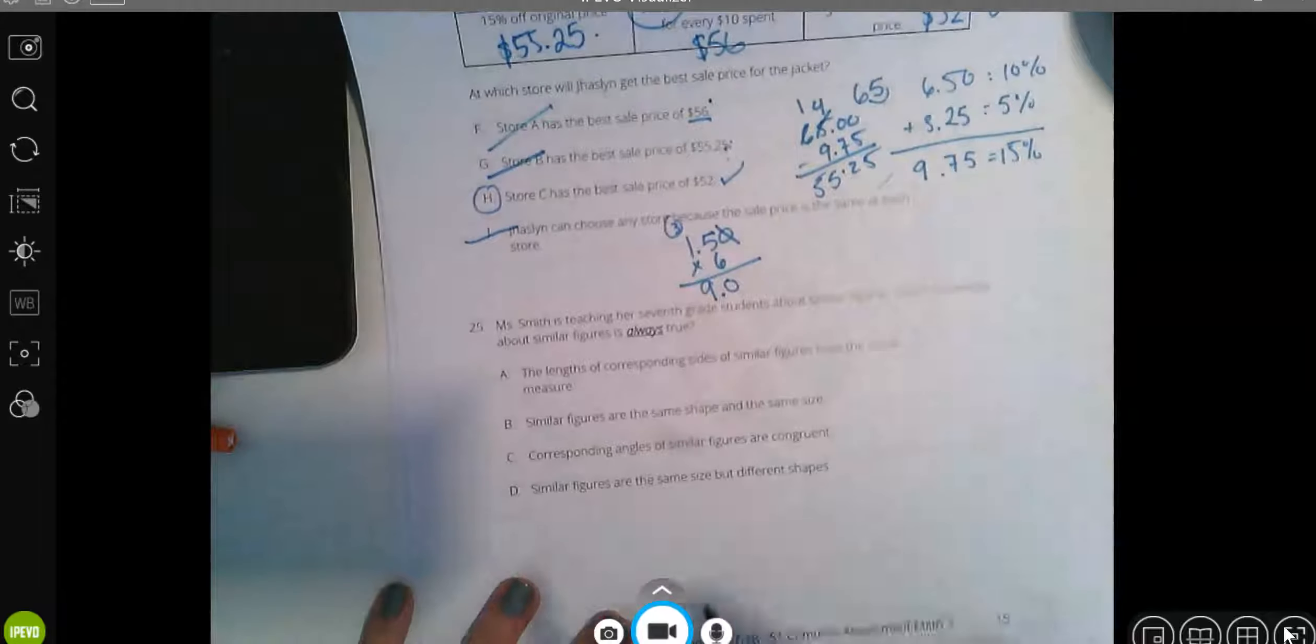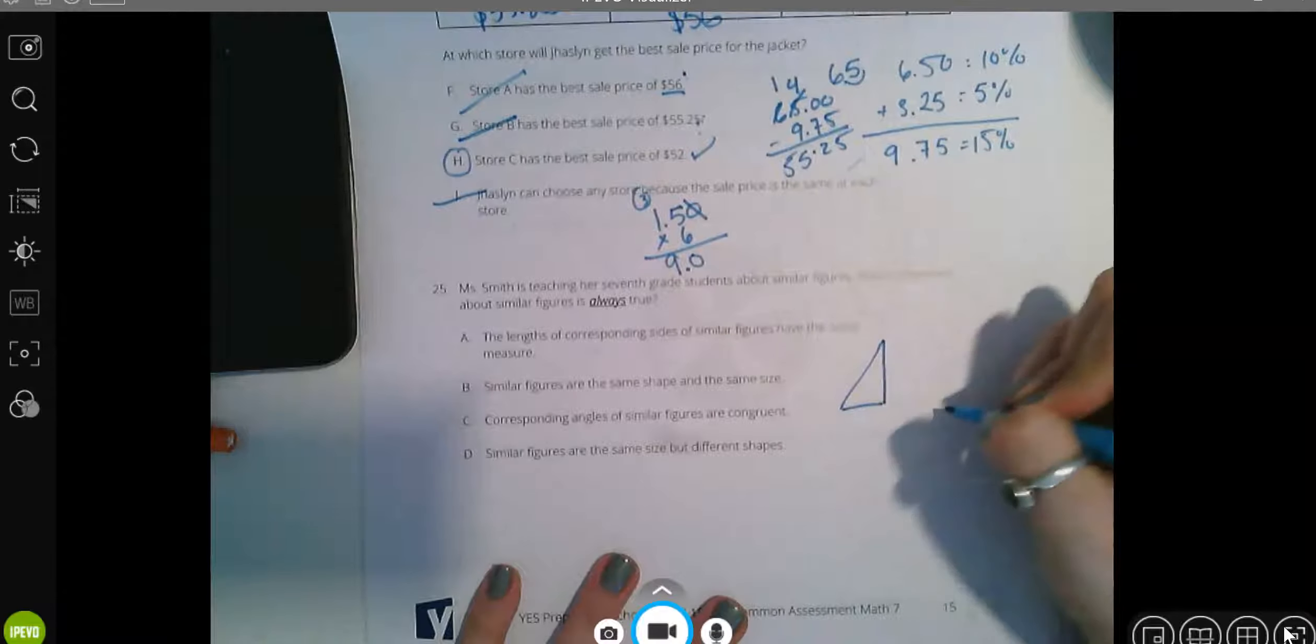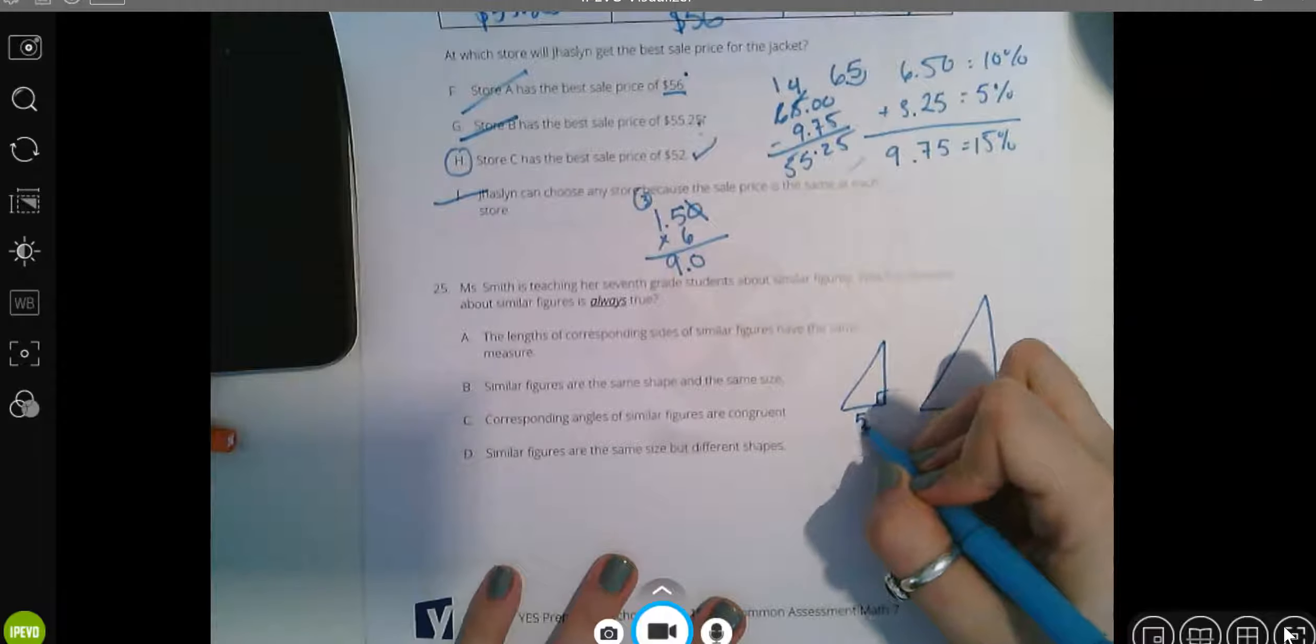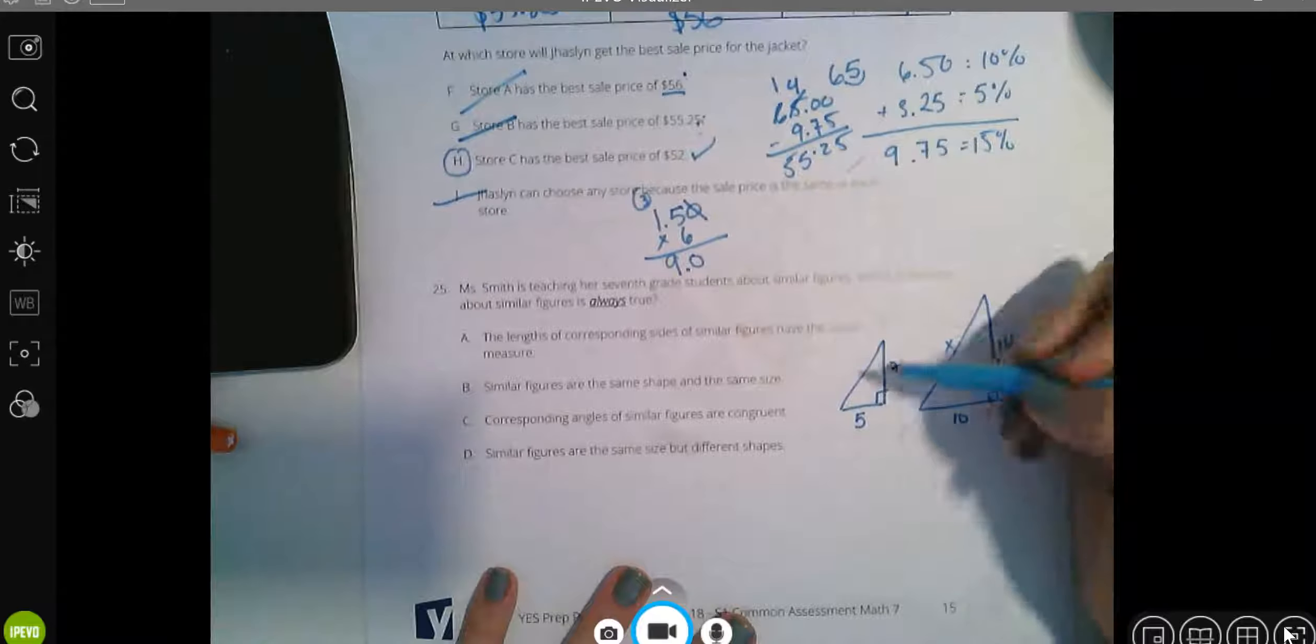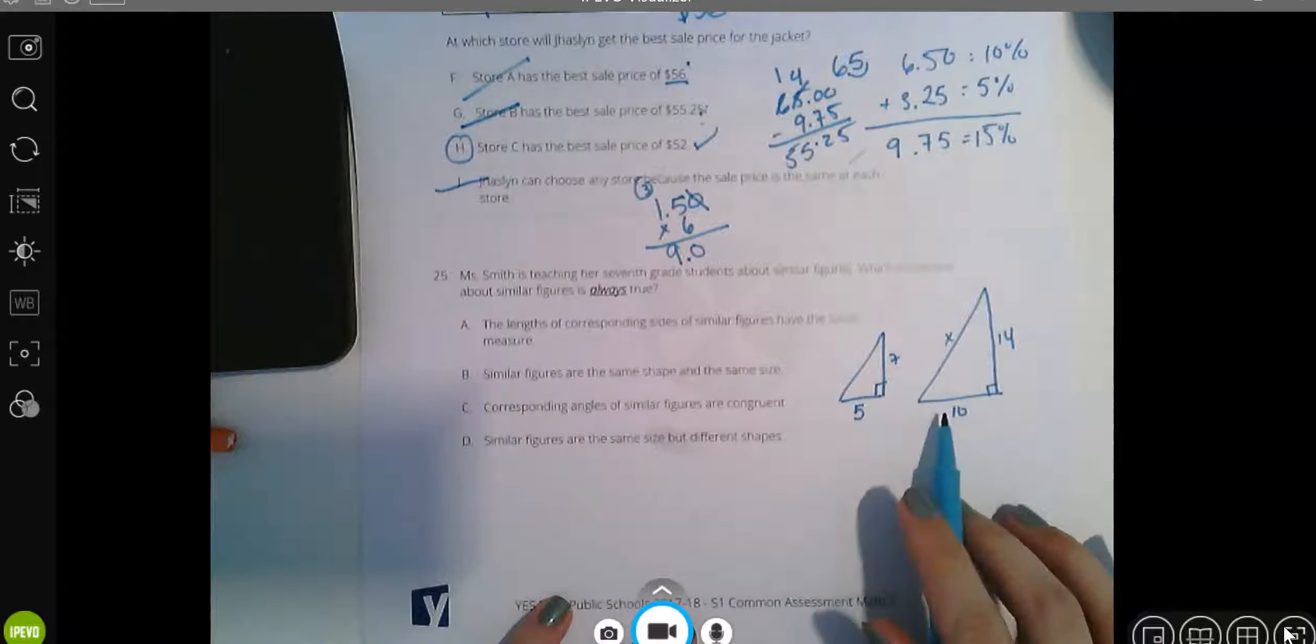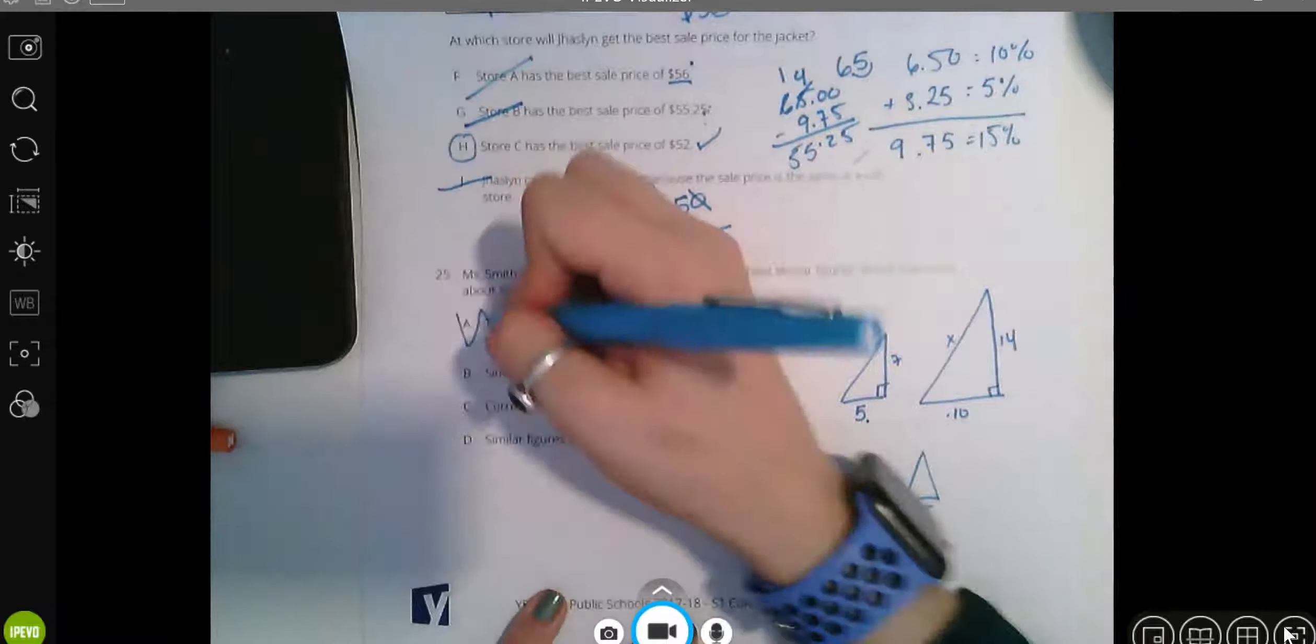Miss Smith is teaching her seventh grade students about similar figures. Which statement about similar figures is always true? The lengths of corresponding sides of similar figures have the same measure. No. Because I could have similar figures. I'm going to draw myself an example. I could have similar right triangles and this is 5 and this is 10 and this is 7 and this is 14. I could have this and these two are similar, but these sides are not the same. You could have similar figures that are exactly the same, but that's not always going to be the case. Most of the time that's not going to be true.